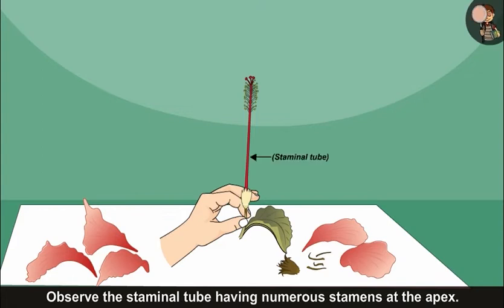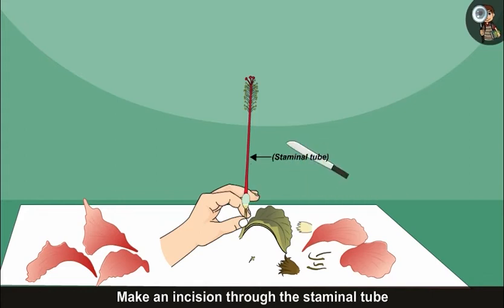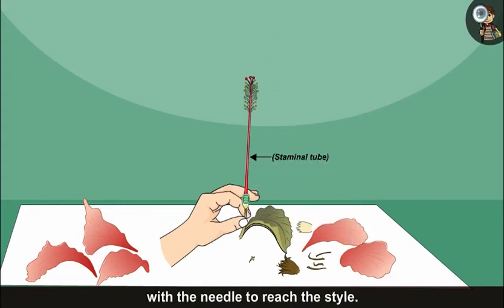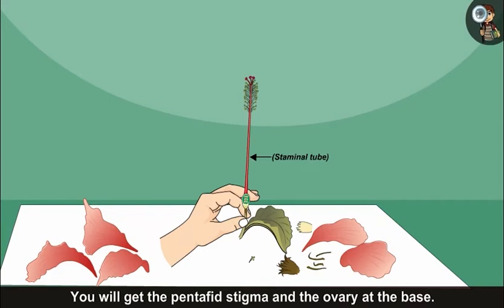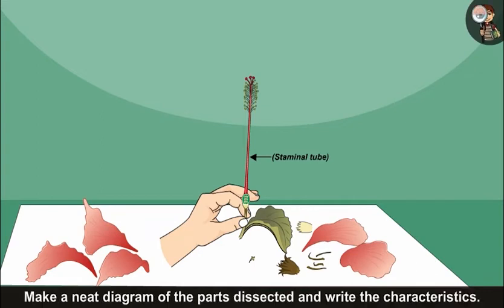Observe the staminal tube having numerous stamens at the apex. Some of the stamens can be separated and displayed. Make an incision through the staminal tube with the needle to reach the style. Continue tracing the style upwards. You will get the pentafid stigma and the ovary at the base. Take out this pistil as one unit and display.